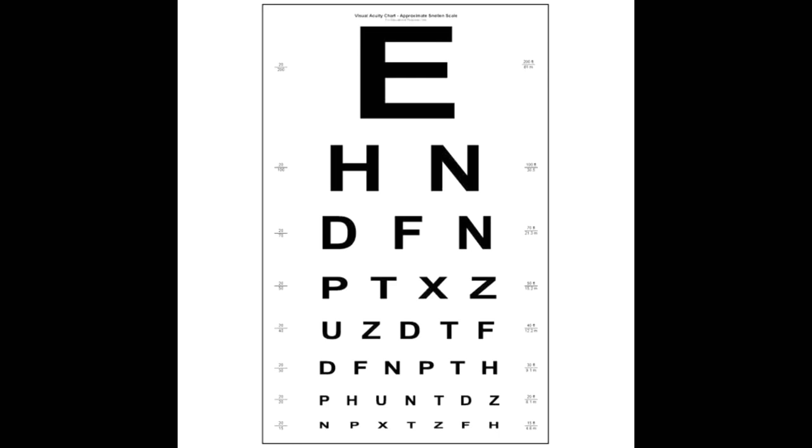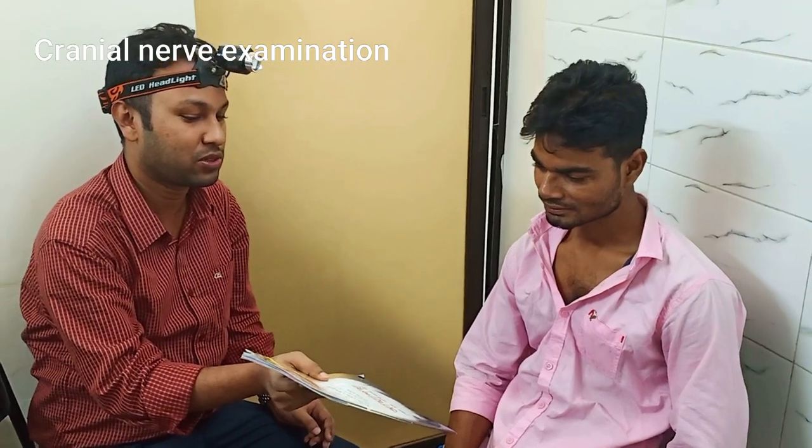Visual acuity should ideally be tested with a Snellen chart, but here the patient is asked to read a distant writing and then a near writing. Color vision testing should ideally be done with an Ishihara chart.